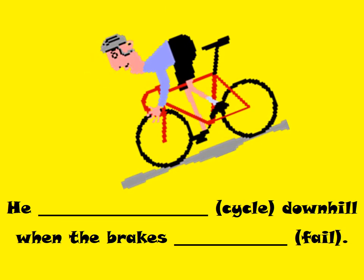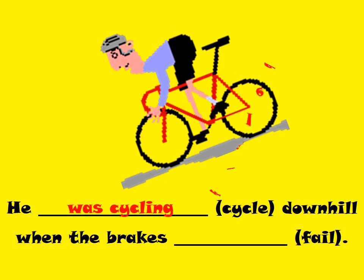He was cycling downhill when the brakes failed. Where is the action in progress? He was cycling downhill. When the brakes failed — it interrupted him, so he stopped.